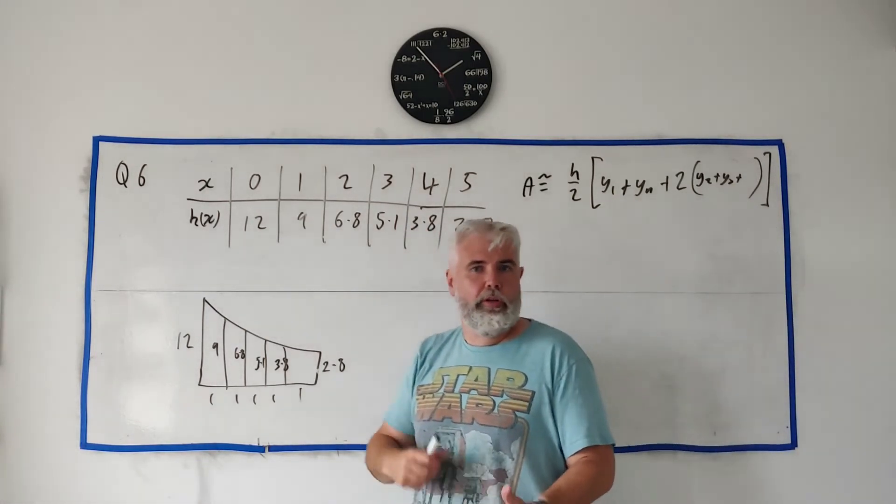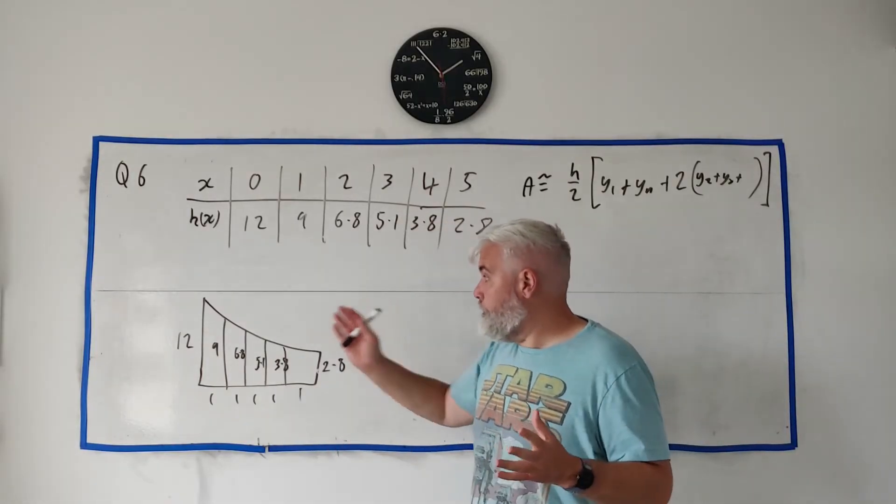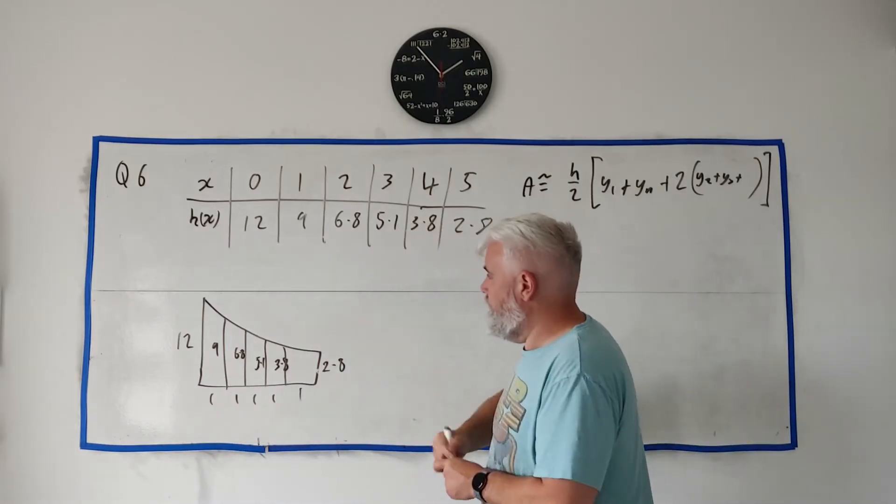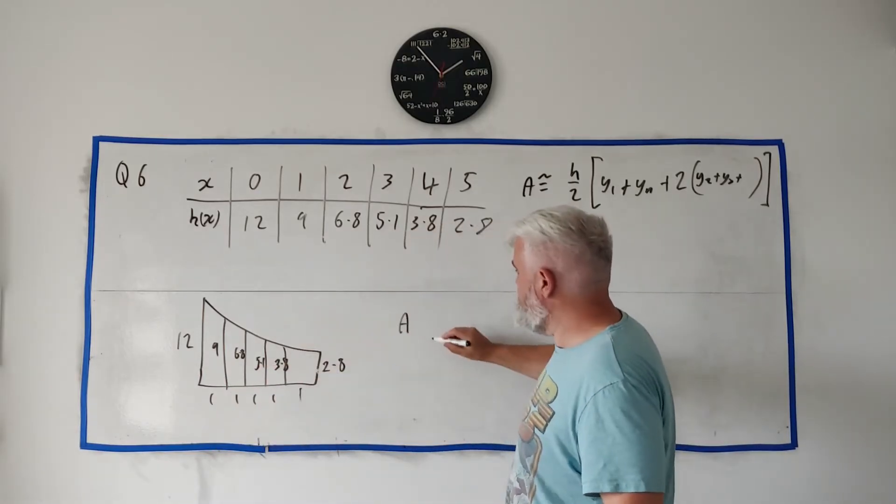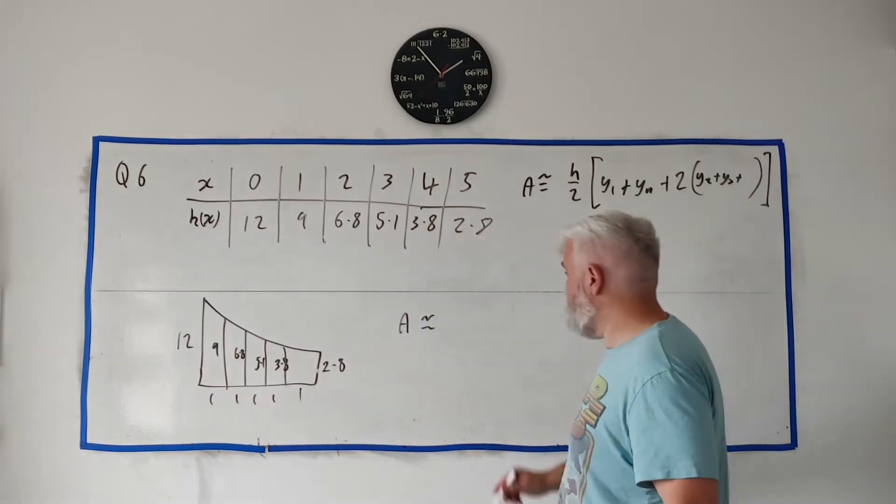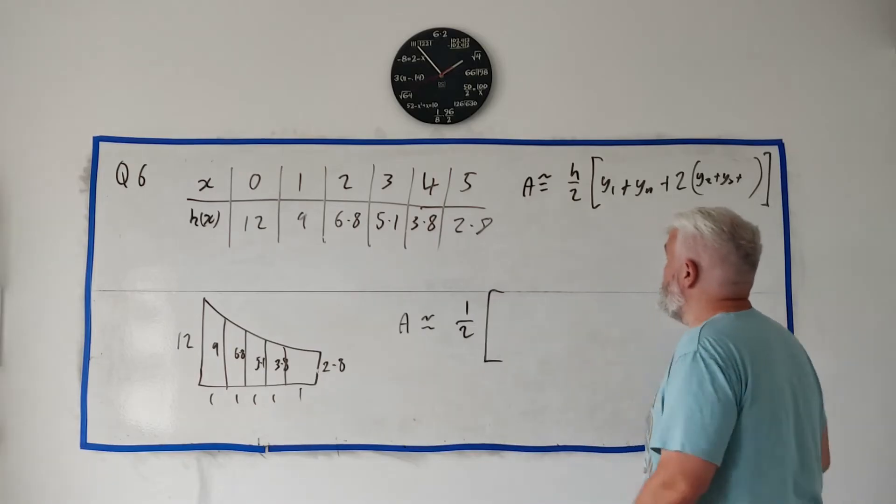So using this, this is a normal trapezoid rule. It's nearly guaranteed to come up in the exam I believe. We just need to learn how to use that. Using this formula, we get the area. First of all we identify h. h is 1, the gap between us. So it's 1 over 2 multiplied into the first number.